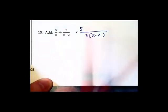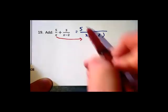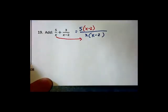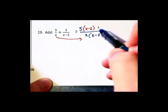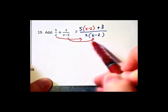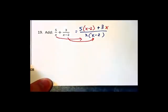This first fraction did have a 5 up above but down below we multiplied by an x minus 2, so we have to multiply by an x minus 2 also up in the numerator. And the second fraction had a 3 up in the numerator, and that denominator changed multiplying by an x, we multiplied by an x up in the numerator there also.